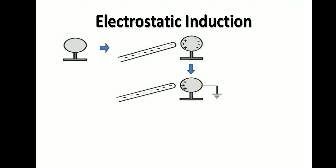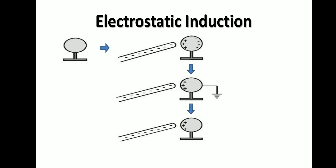After the negative charge flows to earth, that side of the sphere is empty. We disconnect the sphere from the earth — it now has only positive charge, shifted towards the negatively charged rod. When we remove the negatively charged rod, this positive charge is uniformly distributed all over the sphere. We have converted a neutral conductor sphere into a positively charged sphere without any physical contact between the two bodies. This phenomenon is called electrostatic induction.